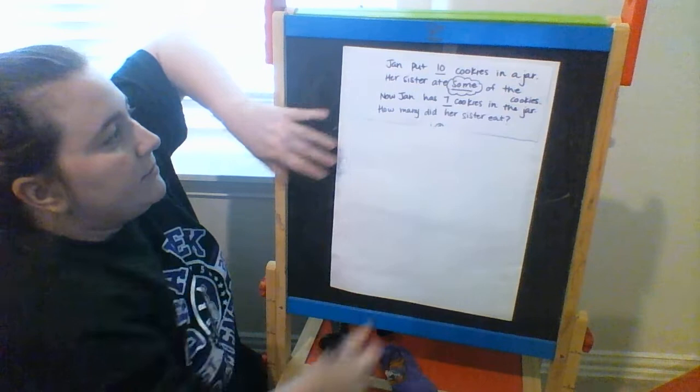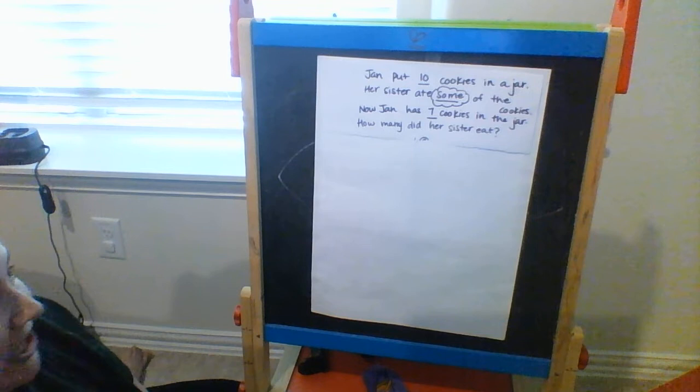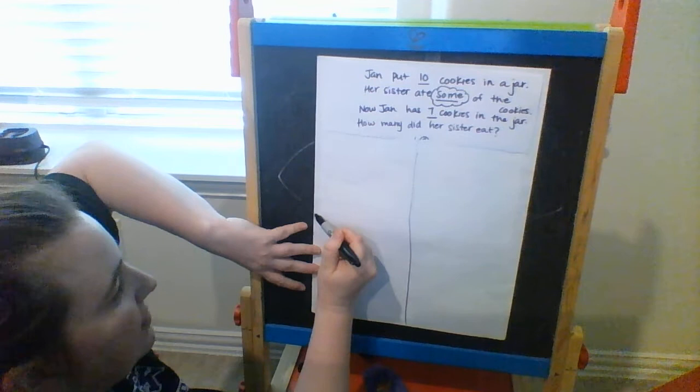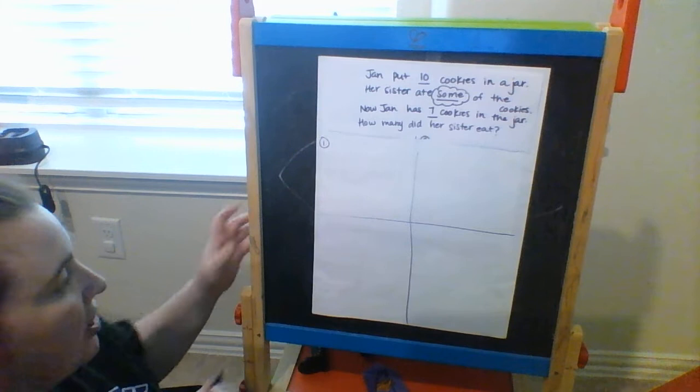This problem says: Jan put 10 cookies in a jar. Her sister ate some of the cookies. Now Jan has 7 cookies in the jar. How many cookies did her sister eat? In order to solve this problem, we are going to go through all four steps. Step one, we're going to draw a picture. We can only draw pictures of things that we know for certain, and the first thing we know for certain is that Jan put 10 cookies in a jar. I'm going to use a circle to represent a cookie and draw 10 of them.